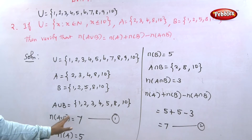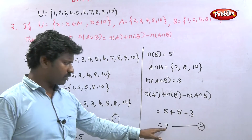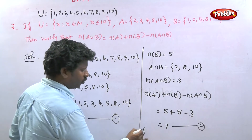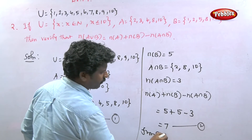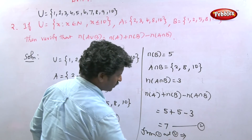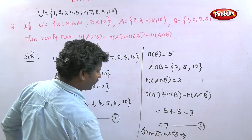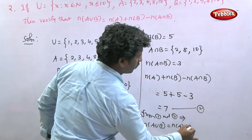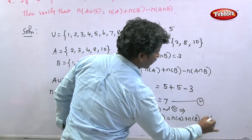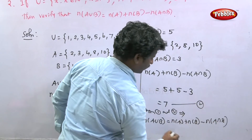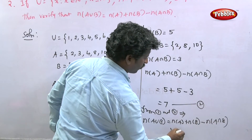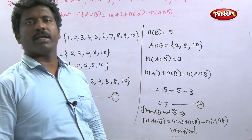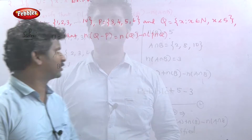Both equation one and equation two give n of A union B equal to 7. From equations one and two, n of A union B equals n of A plus n of B minus n of A intersection B is verified.